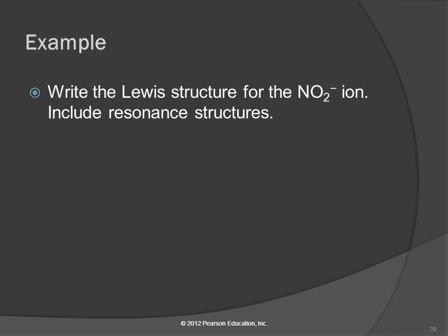So let's write the Lewis structure for the nitrite ion and include resonance structures. We can have resonance structures when we have a double bond and we have to choose which atom of the same element it goes with. Let's do this one.